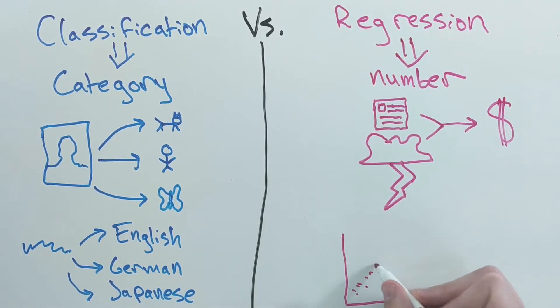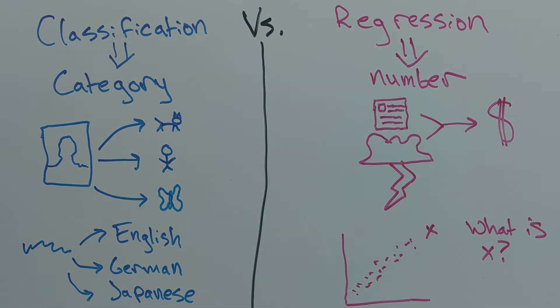Similarly, given a list of points and you wanted to predict the value of a function at an unknown value x, that would also be a regression problem.